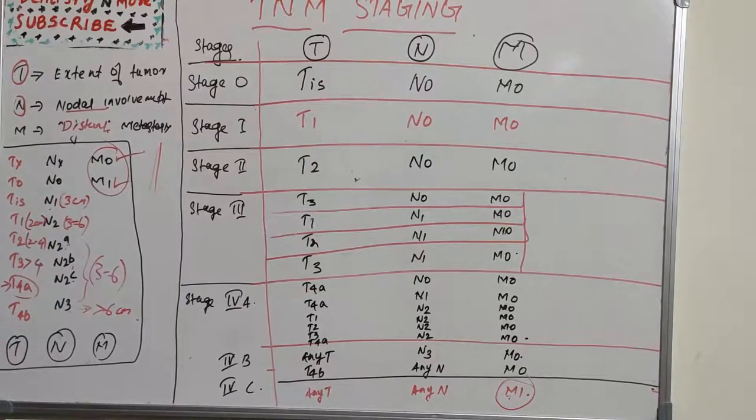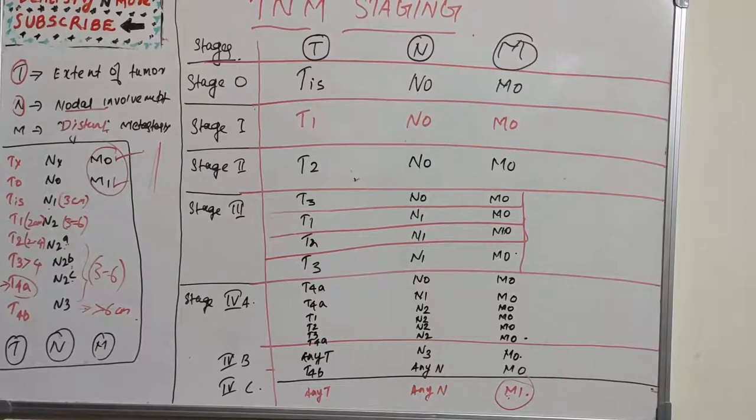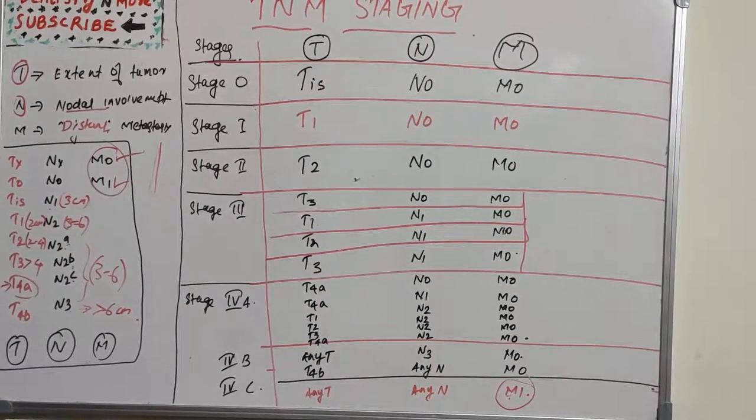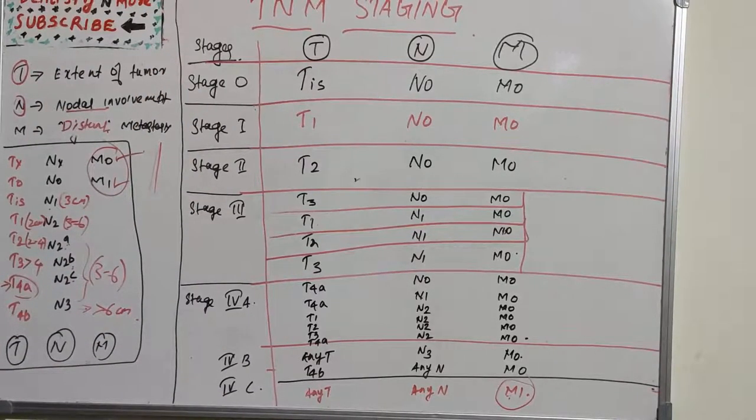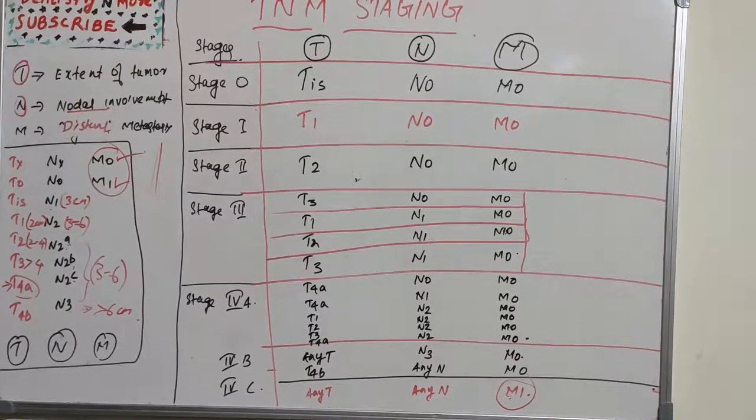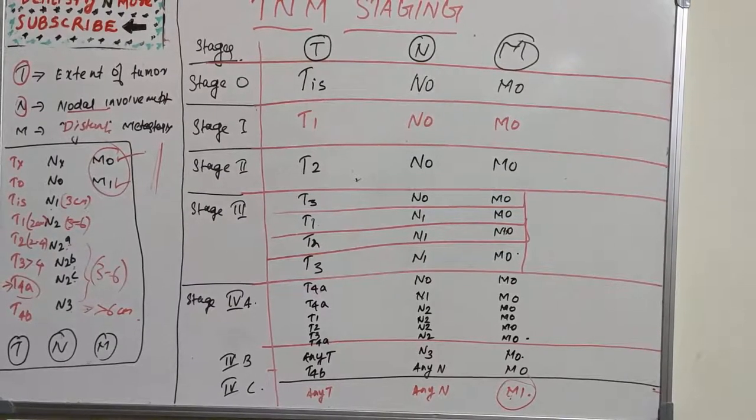This current TNM staging relies on morphology of the tumor—anatomical site and extent of disease—with little or no attention to patient factors. Patient factors are least considered in TNM staging. It is helpful; it gives us an idea about therapy, prognosis, and sharing information between health centers, though it has many shortcomings.